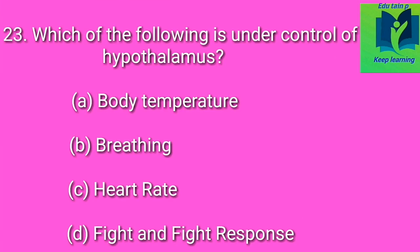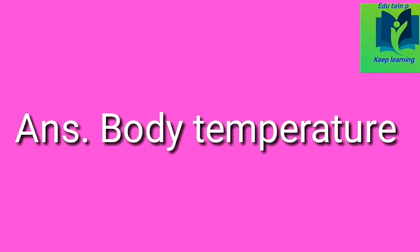Which of the following is under control of hypothalamus? Option A: body temperature. Option B: breathing. Option C: heart rate. Option D: fight and flight response. Answer: body temperature.